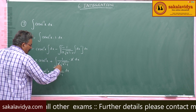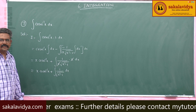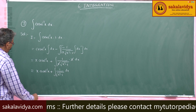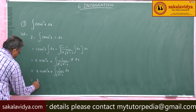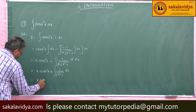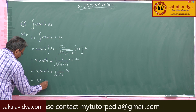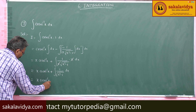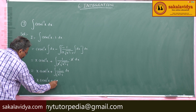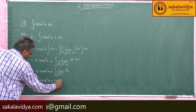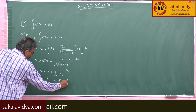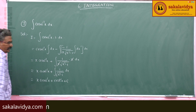So, x cosecant inverse x plus integral of 1 by root of x square minus 1 dx. This will be cosh inverse x. So the final answer is x cosecant inverse x plus cosh inverse x plus constant of integration.